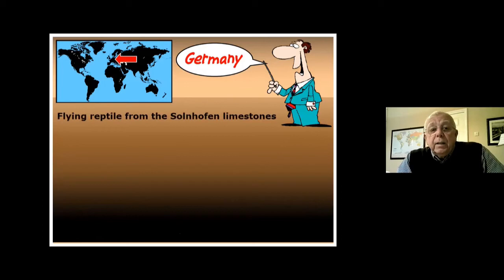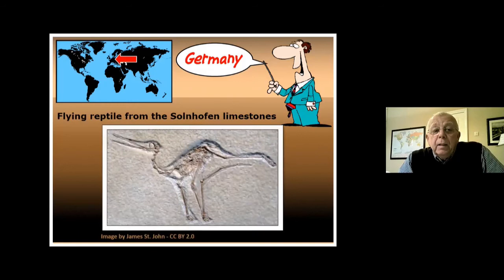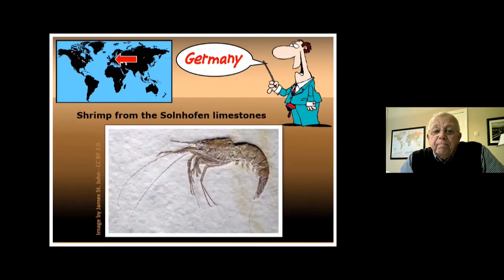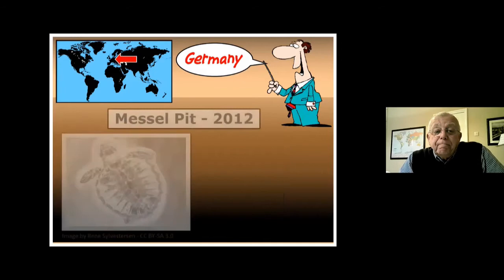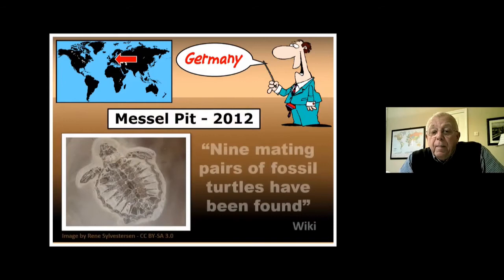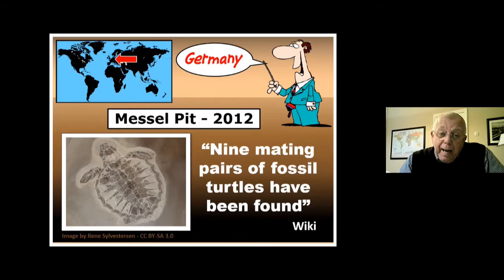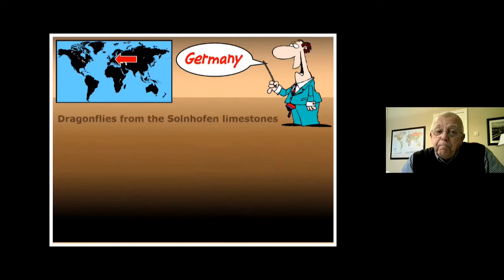From the same Solnhofen limestones: a flying reptile with fine bones, a skull, and a shrimp — no difference from the modern shrimp. Still in Germany, the Messel Pit 2012: according to Wikipedia, nine mating pairs of fossil turtles have been found. We had a creature fossilized in the process of giving birth; now nine male and female turtles caught in the very act, locked into sedimentary layers inundated by water and the sediment it contained.